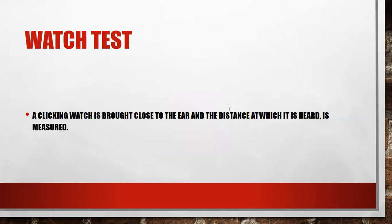A clicking watch is drawn close to the ear and the distance at which it is heard is measured. This is another method of assessing hearing ability. The watch is brought close to the patient's ear, and the distance at which the patient can hear the click sound is measured. On the basis of the difference in distance, we can evaluate the hearing ability of the patient.